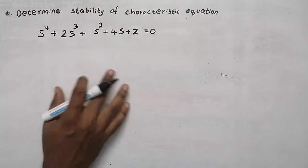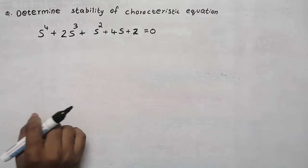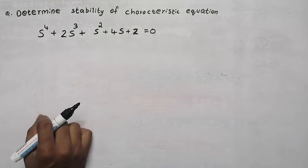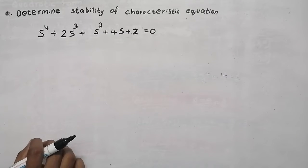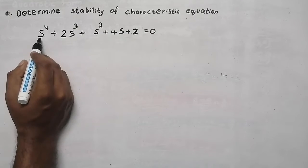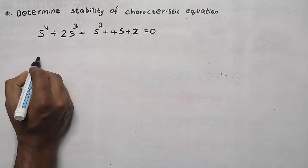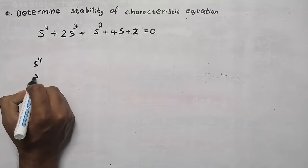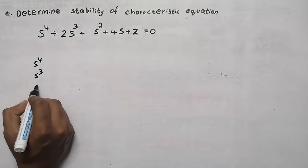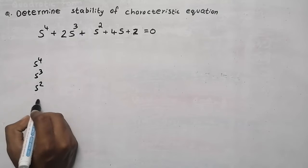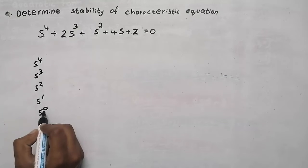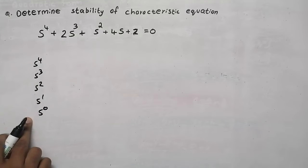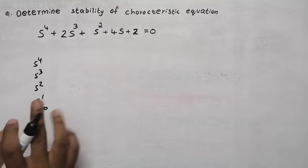We are going to find the stability of this characteristic equation. First, write a column with powers of s: s raised to 4, s raised to 3, s raised to 2, s raised to 1, and s raised to 0.